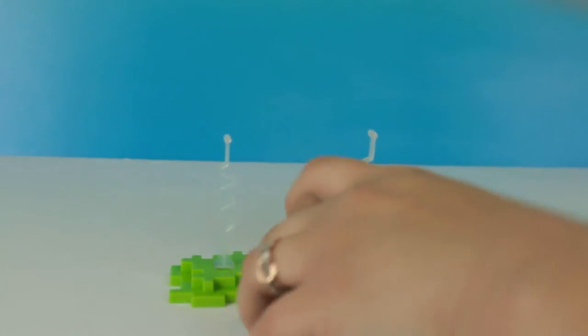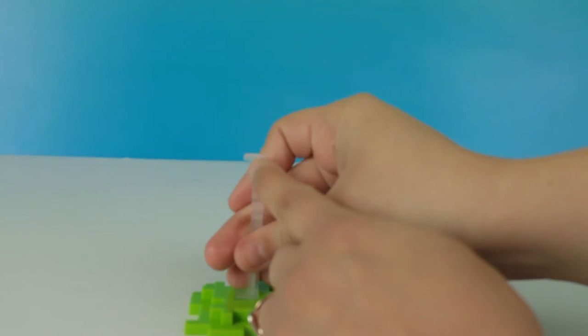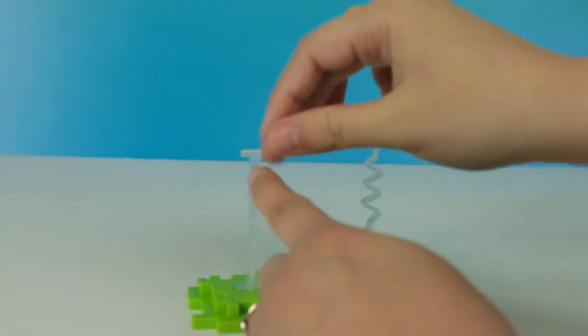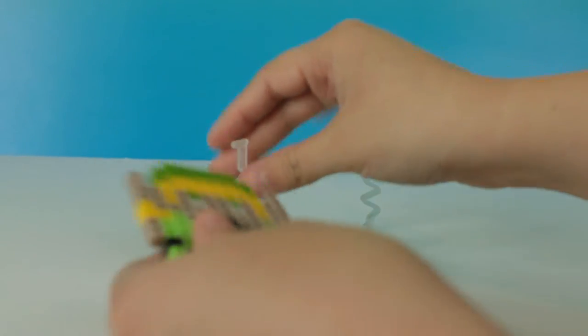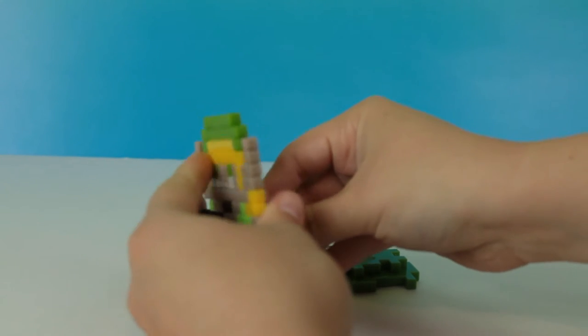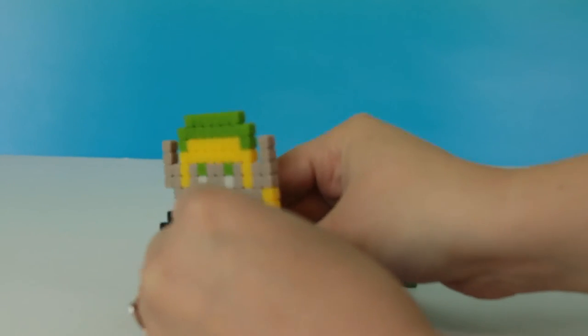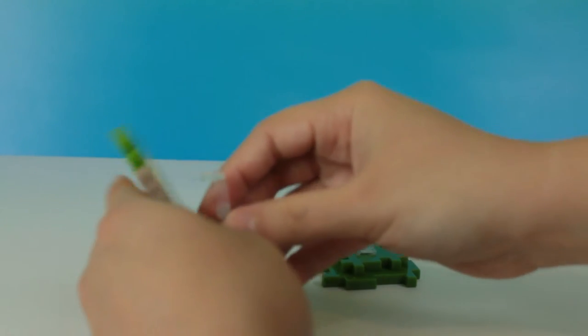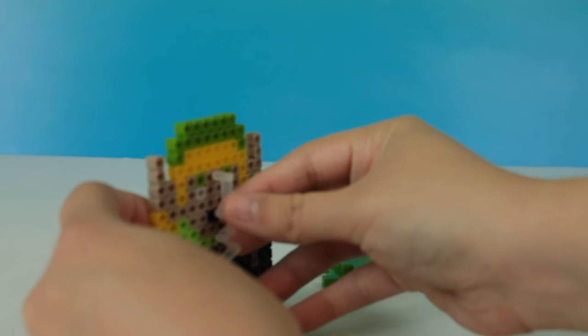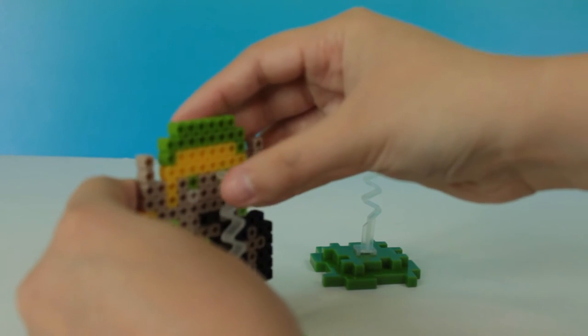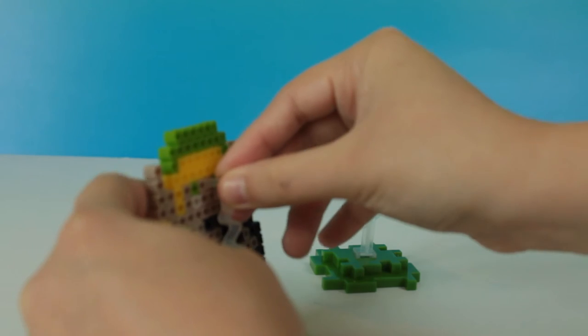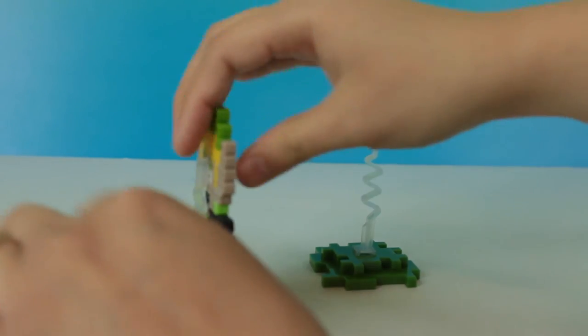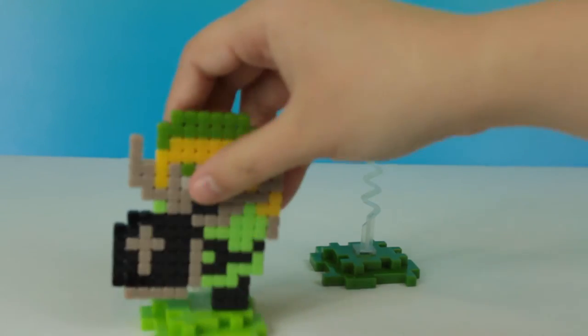Okay, so it says that you take this little pointed area right there - I don't know if you see it. Maybe the blue helps it show a little better. And put it in the hole. So I'll set him up right here and see where that lays. I'm gonna go with this hole between his eyes. So that's our Link.